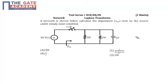Hello friends, this question is from the subject of network in the chapter of Laplace transforms. It is a one mark question and the question says that a network is shown below, calculate the input impedance ZN seen by the source under steady state condition.